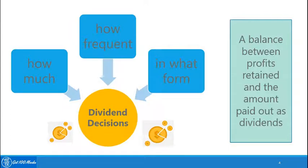The company must also decide in what form to give the money — whether in cash or in other forms, which will be covered further in the course. There has to be a balance struck between the profits made by the company and the profits shared with its shareholders. While it is essential for the company to share its profits, it is not mandatory that the entire profits are shared.